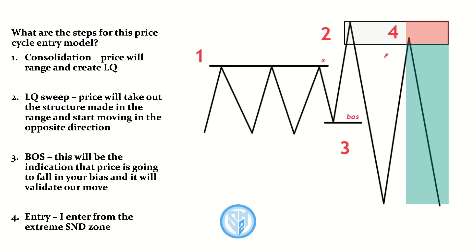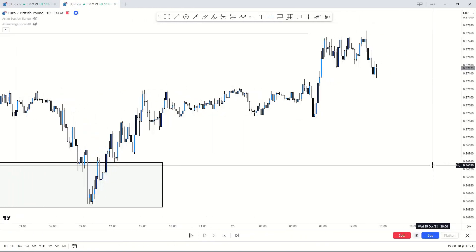Now that we understand the entry, break of structure, liquidity sweep, and consolidation of liquidity, we're going to take it to the real charts on Euro GBP and break down that trade signal which hit 3RR in just 30 minutes.